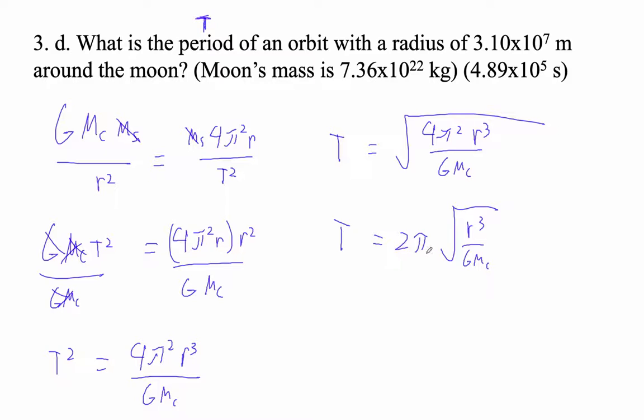I'm going to try this guy. I'm going to go 2 times pi times the square root of, and then I'm hitting that alpha f1. I'm getting a fraction in there. And then what's my radius? 3.1 times 10 to the 7th, raised to the 3rd.